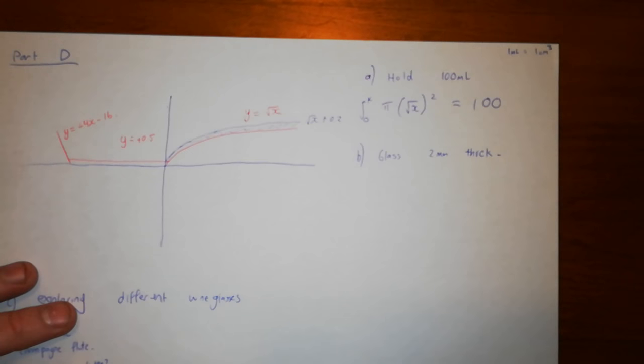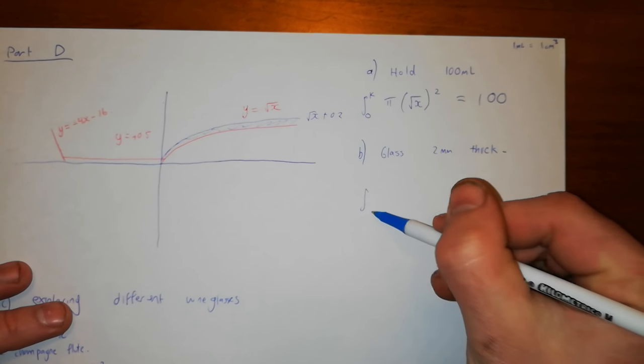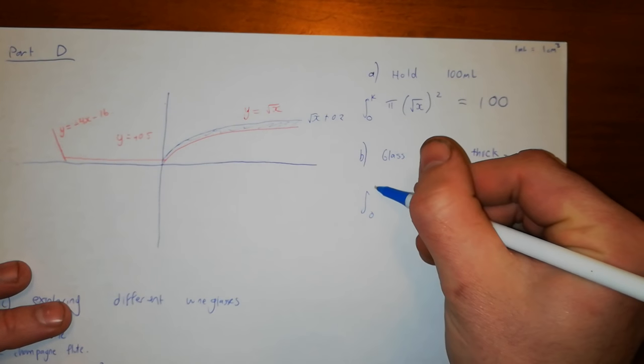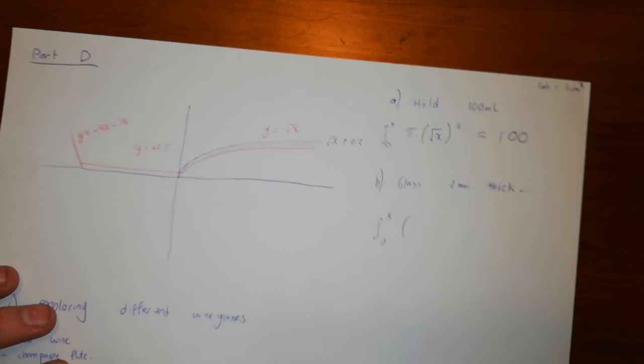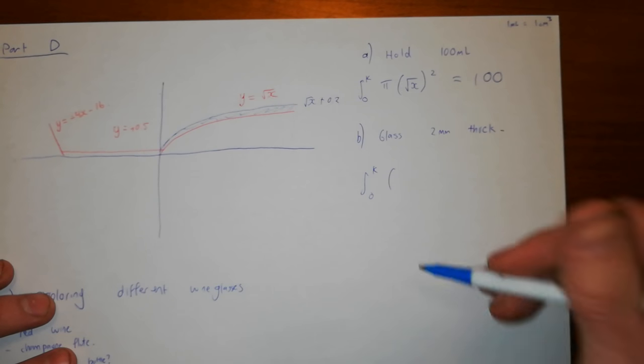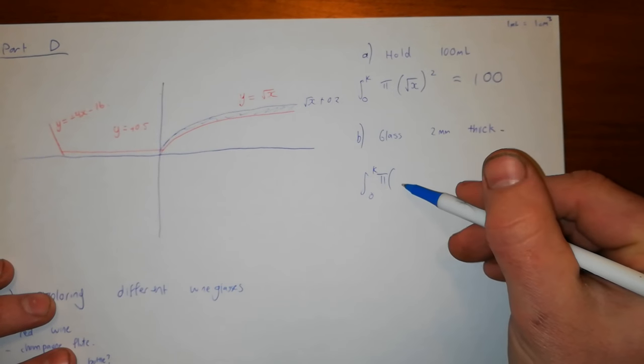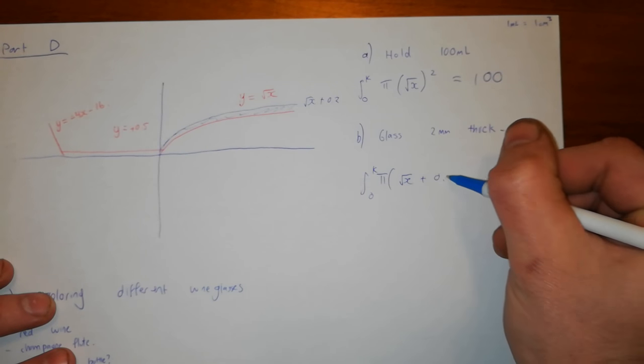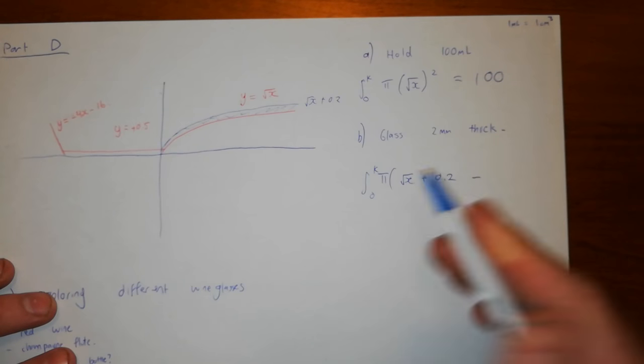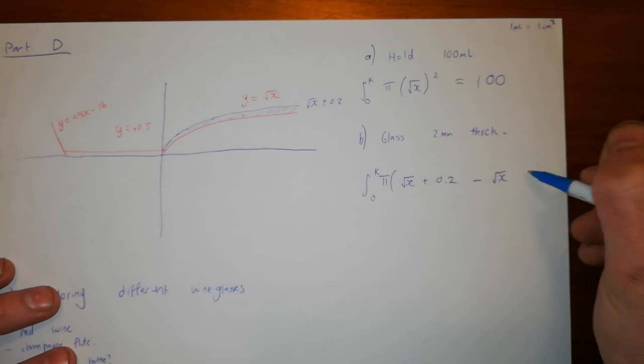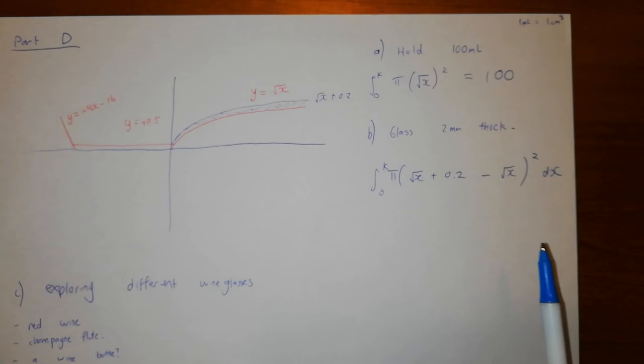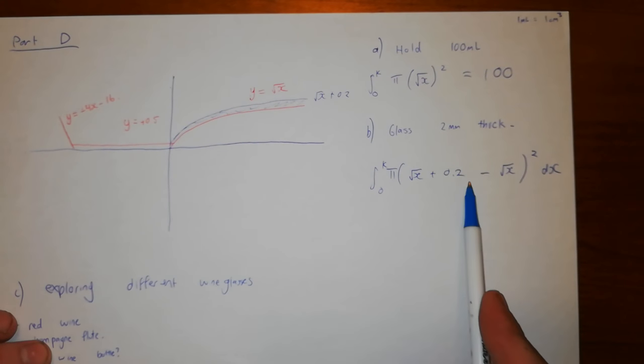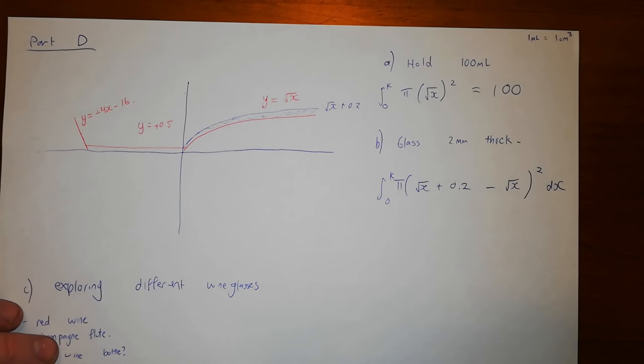And now we're not talking about the volume of how much wine it can hold, we're talking about this volume here when we rotate that around the x-axis. And so that would be the integral from 0 to whatever the k value is we've found, it should be about 7 or 8. So the integral from 0 to k of the top function take the bottom function. It's going to be π times the top function which in this case is the square root of x plus 0.2 take away the bottom function which is the square root of x, and squared with regards to x. So we're using that same formula where we're rotating a function around the x-axis, this is our function here, the top one take away the bottom one.